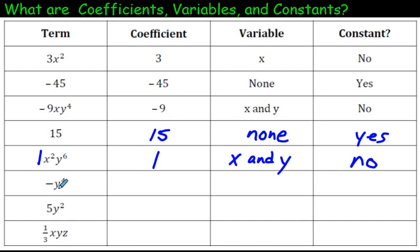The next one. What is the coefficient here? Well, be careful. The coefficient is negative 1. The variable is y. And is it a constant? No, it is not.